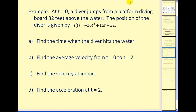Let's take a look at an example. At time t = 0, a diver jumps from a platform diving board 32 feet above the water. The position of the diver is given by s(t) = −16t² + 16t + 32. We want to find: the time when the diver hits the water, the average velocity from t = 0 to t = 2, the velocity at impact, and the acceleration at t = 2.